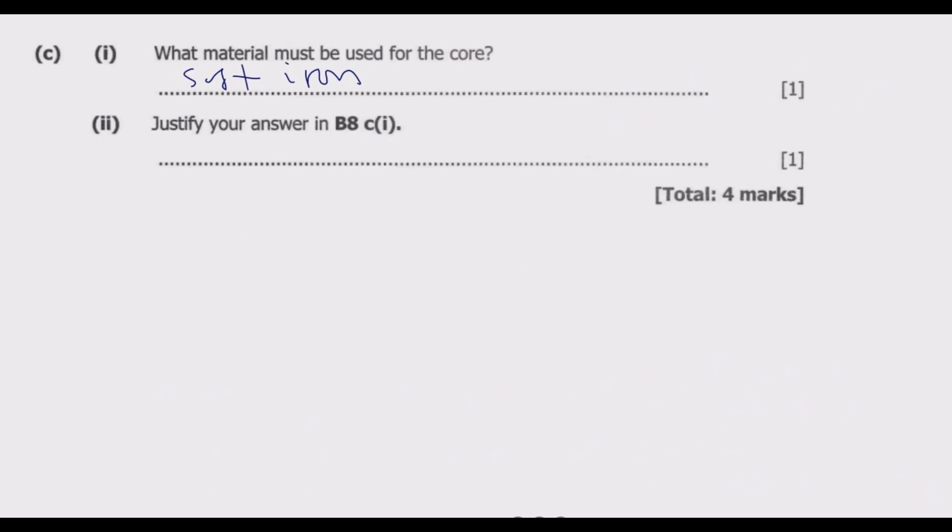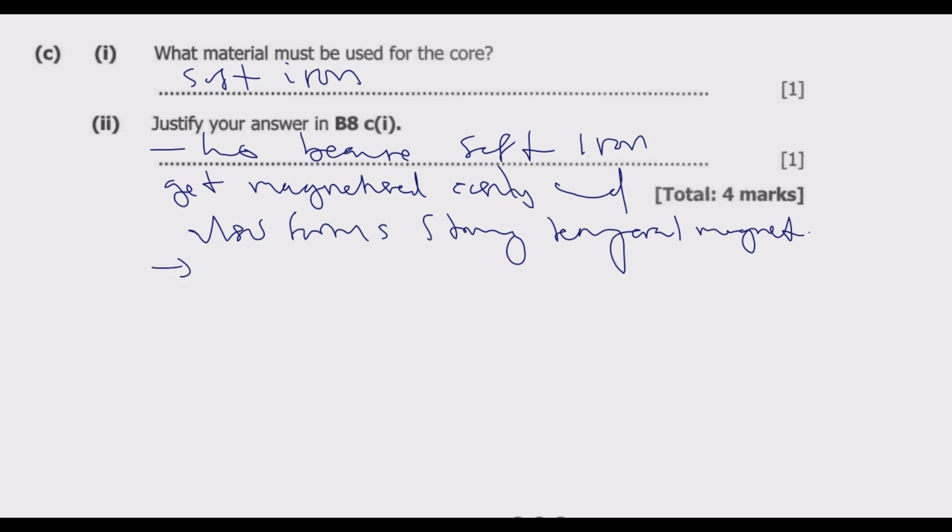Number 2: justify your answer. The answer is this is because soft iron gets magnetized easily and also forms strong temporary magnet. Then it also gets demagnetized easily. That's the answer that you give.